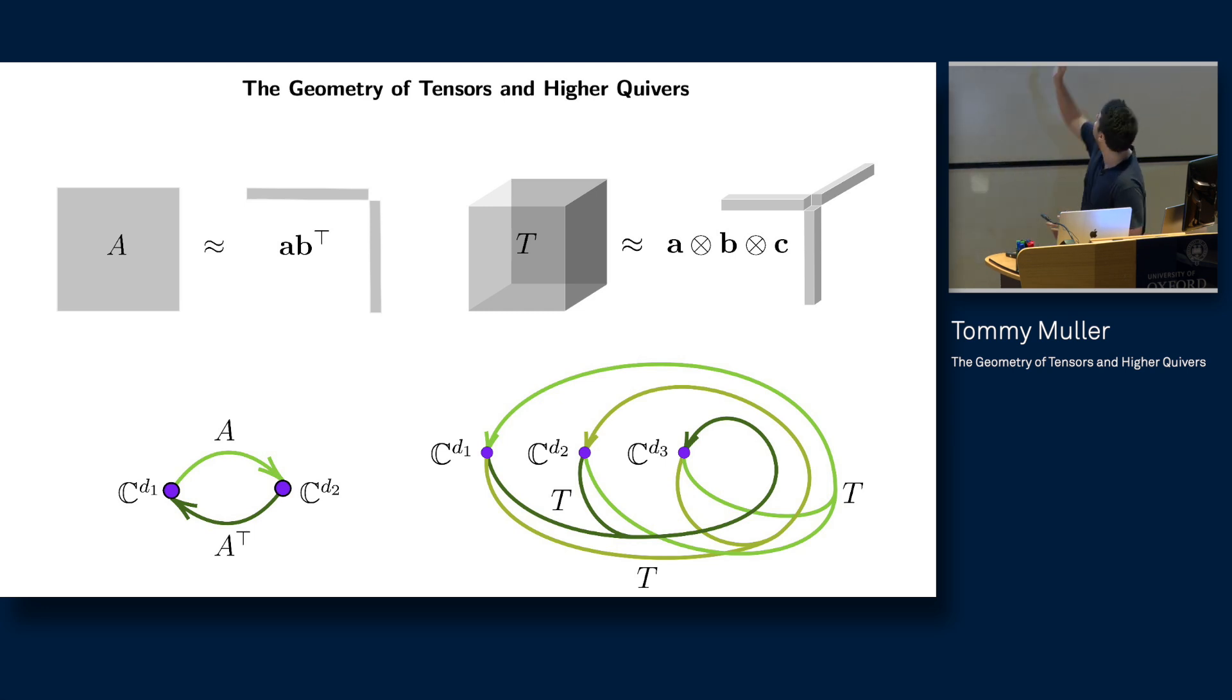This is a picture of a three-dimensional tensor on the top right, a higher dimensional analog of a matrix, and its entries all store these auditory signals together. Tensor decomposition is the problem of approximating this tensor by rank one tensors, in other words, a tensor product of three vectors a, b, and c.